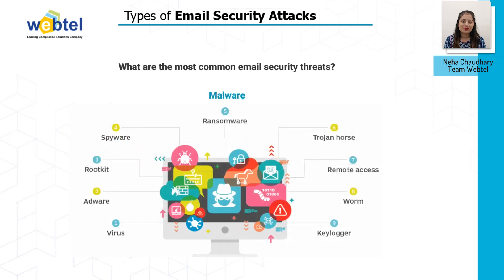Next is malware. Malware is delivered to the user over email and includes spyware, adware, scareware, and so on. These malicious programs can be sent through email attachments, codes, and links. Malware directly attacks the email security of the user and must be avoided to protect the sensitive data of the organization. Types of malware include virus, adware, rootkit, spyware, ransomware, trojan horse, remote access tools, worms, and keyloggers, as shown in the screenshot.